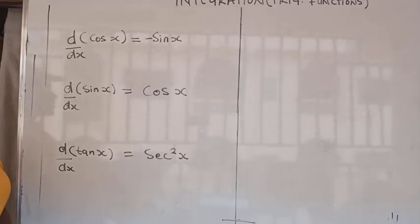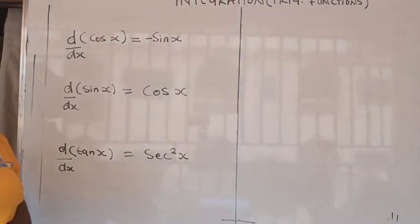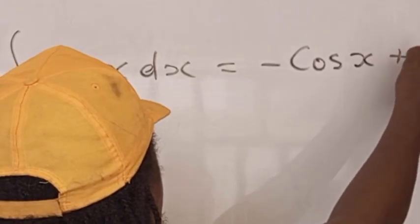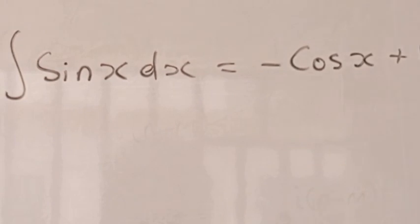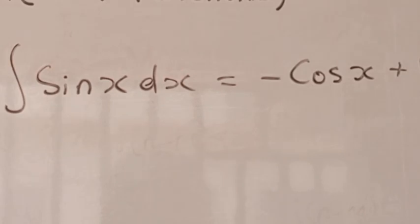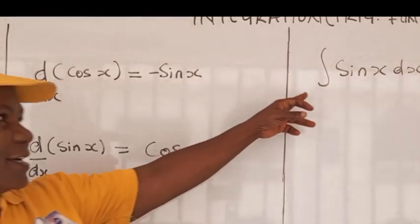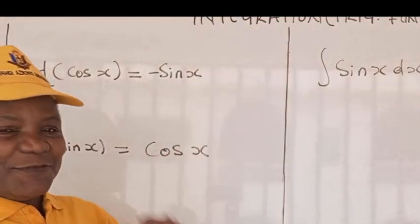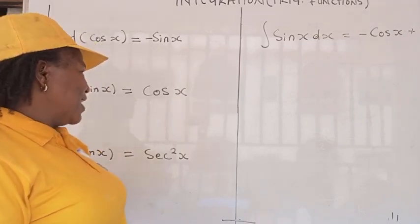Looking at integration as anti-differentiation, we now have that integration of sin x dx is equal to minus cos x plus k, the constant of integration, since it is an indefinite integral.